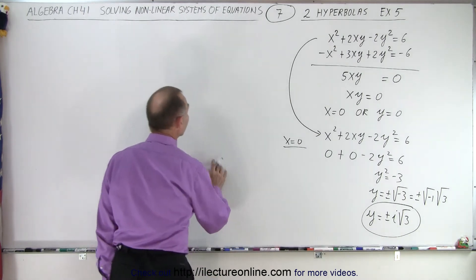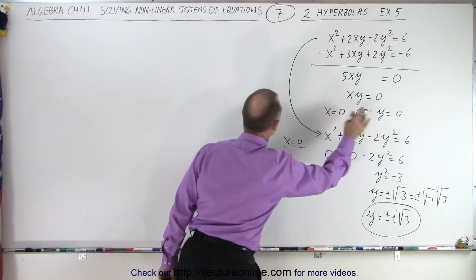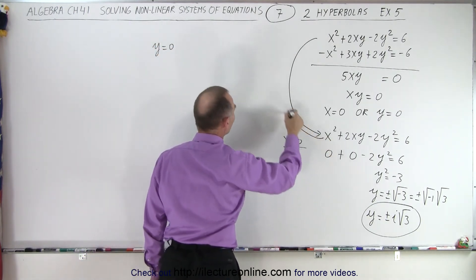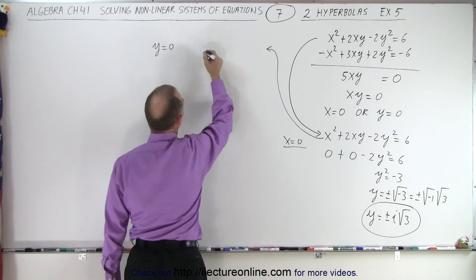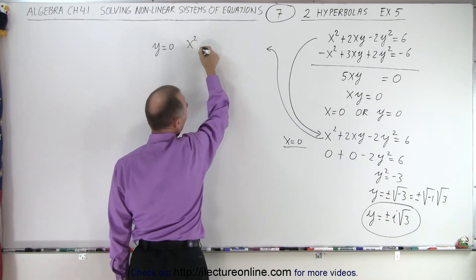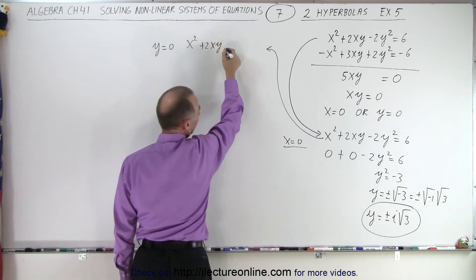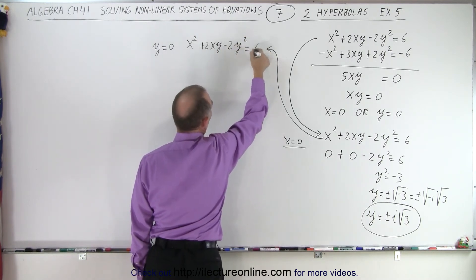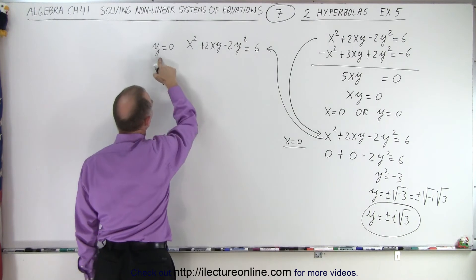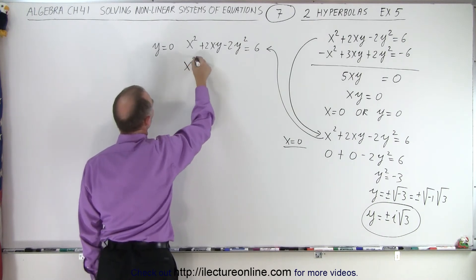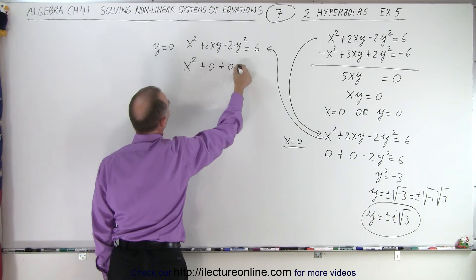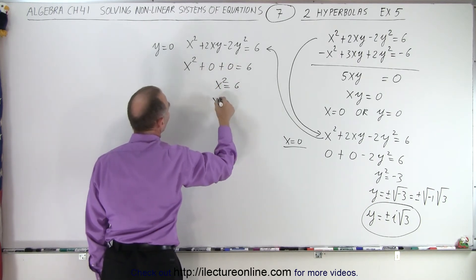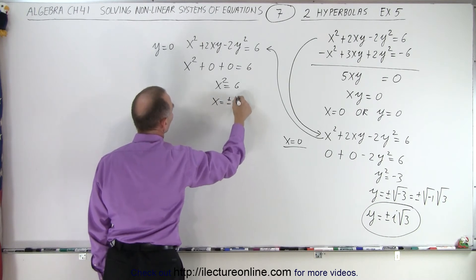And then we can do it again with y equals 0. So when y is equal to 0, we're going to take the same equation again. So we're going to write x squared plus 2xy minus 2y squared is equal to 6. Now y is going to become 0. So I end up with x squared plus 0 plus 0 is equal to 6. Or x squared is equal to 6. Or x is equal to plus or minus the square root of 6.